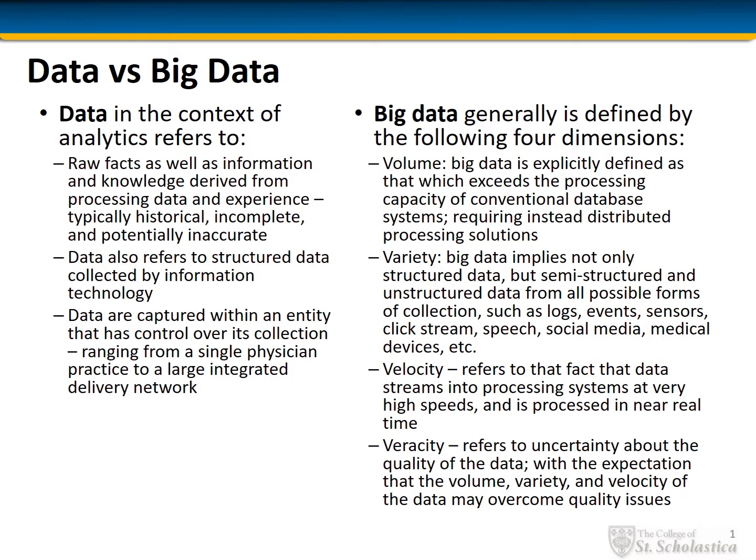Velocity is the third V. This refers to the fact that data streams into processing systems at very high speeds and is processed in near real time. And the last V is veracity, which refers to uncertainty about the quality of the data, with the expectation that the volume, variety, and velocity of the data may overcome quality issues.